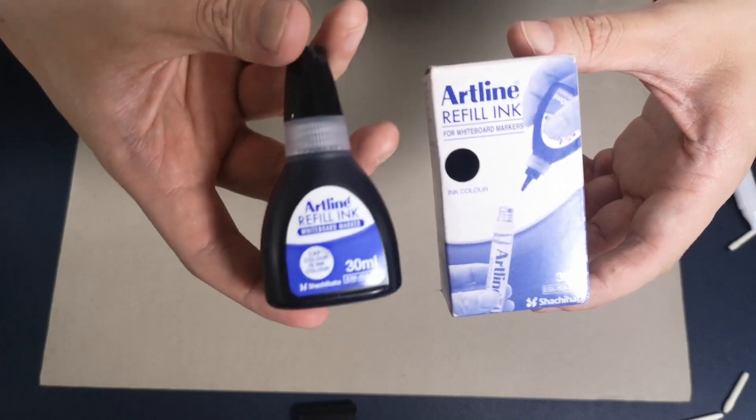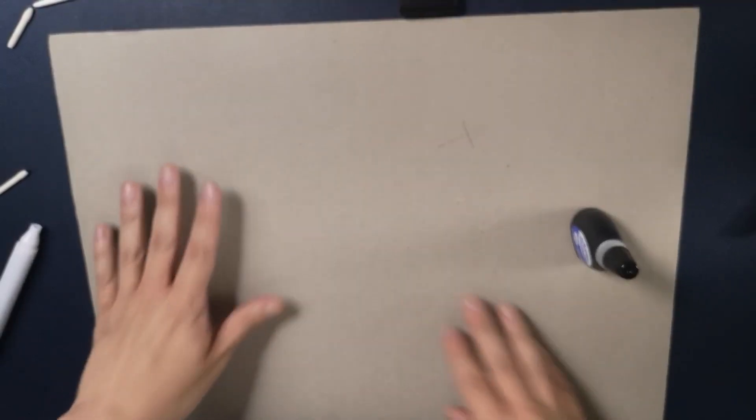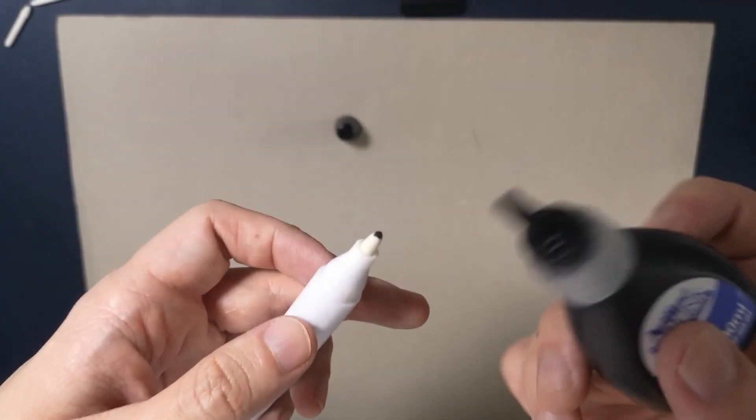This is the ink I am using, the Artline refill ink for whiteboard markers. Remember to lay out some newspaper or unwanted paper before you apply the ink.